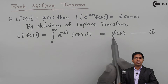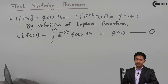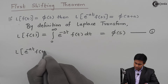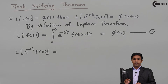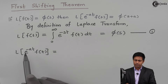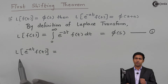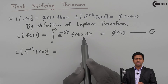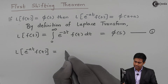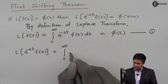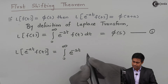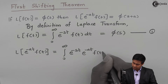Now let's use this definition for the derivation. We have the term: Laplace of e raised to minus at into f(t). If we compare this with the definition, then here instead of f(t), we have e raised to minus at into f(t) as our function. So in the integration, instead of f(t), I will replace it with e raised to minus at into f(t). This integration will become: integration from 0 to infinity of e raised to minus st, and the function will be written as e raised to minus at into f(t) dt.